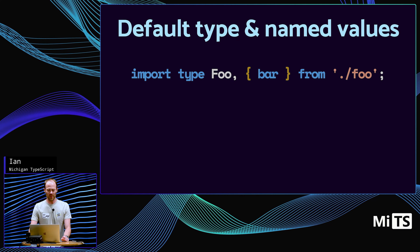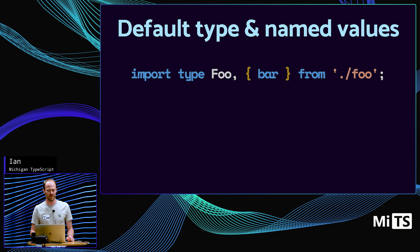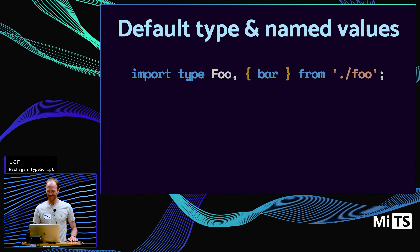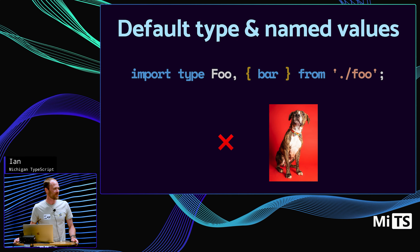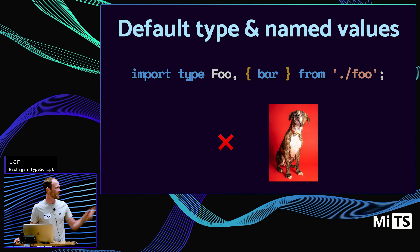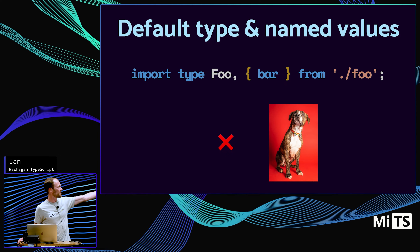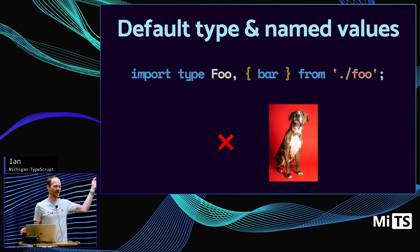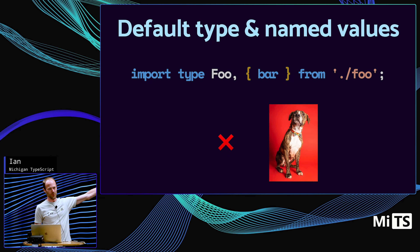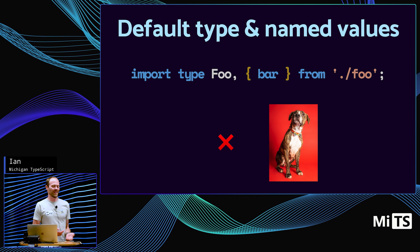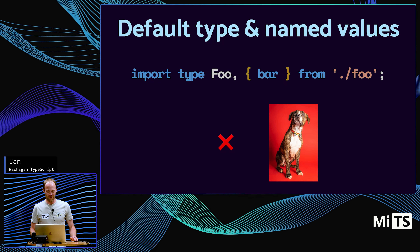How about a default type combined with a named value? No, that doesn't work. That was called out explicitly in the PR from Andrew Branch. It's ambiguous — does the type apply to bar? Because if you took out the foo, that's just 'type bar'. So rather than deciding on something ambiguous, they said you just can't do that.